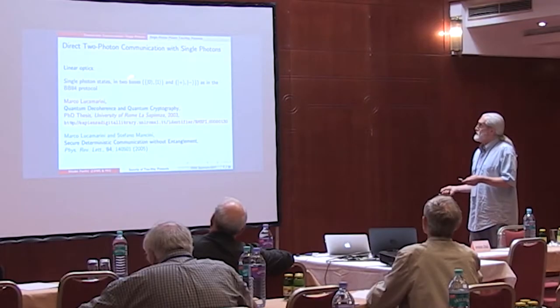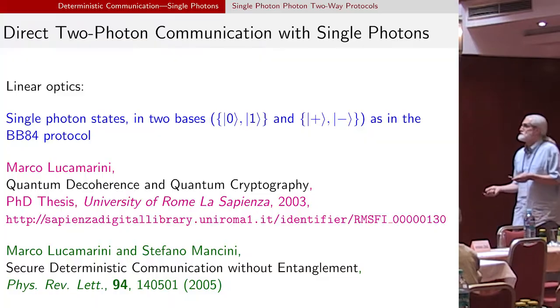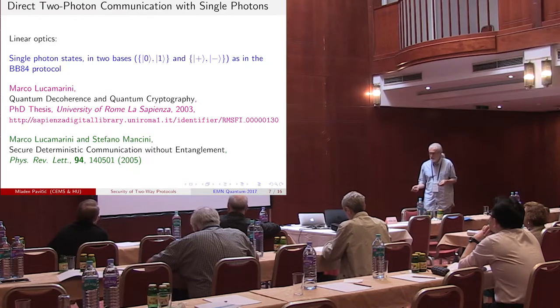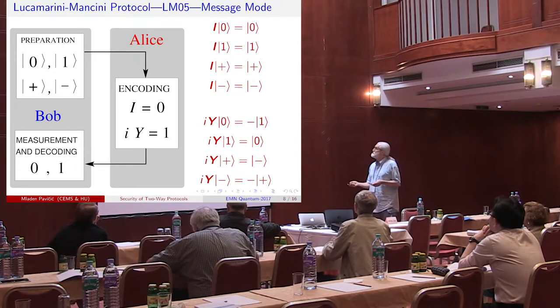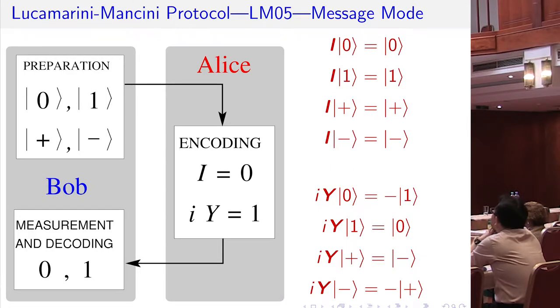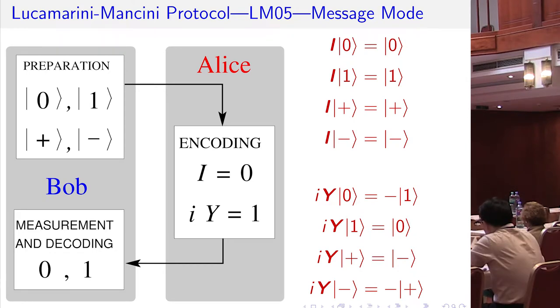There are other protocols of the same type — protocols with single photons. Similarly to the BB84 protocol, we have horizontally, vertically, and diagonally polarized photons. The protocol was proposed and in the meantime also implemented. The preparation of messages is simple: Alice changes the incoming Bob's state via two operators, and she doesn't even need to know whether the messages were in one or the other basis.